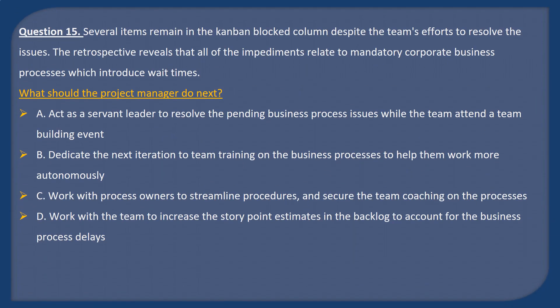Question 15. Several items remain in the Kanban blocked column despite the team's efforts to resolve the issues. The retrospective reveals that all of the impediments relate to mandatory corporate business processes which introduce wait times. What should the project manager do next? A: Act as a servant leader to resolve the pending business process issues while the team attend a team building event. B: Dedicate the next iteration to team training on the business processes to help them work more autonomously. C: Work with process owners to streamline procedures and secure team coaching on the processes. D: Work with the team to increase the story point estimates in the backlog to account for the business process delays.